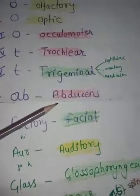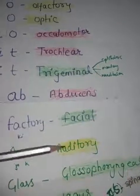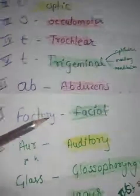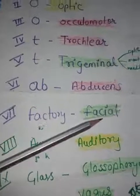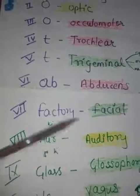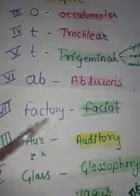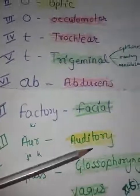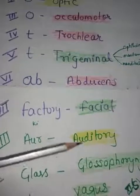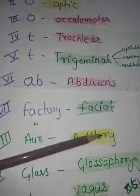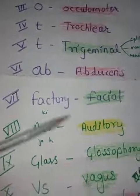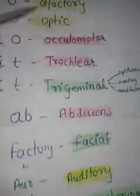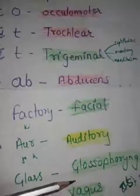Abducens supplies some extraocular muscles of the eyeball — specifically the lateral rectus muscle. The seventh cranial nerve is the facial nerve, which is a mixed cranial nerve. The eighth is auditory — related to the ear — and it is sensory. So the nose and ear nerves are sensory.